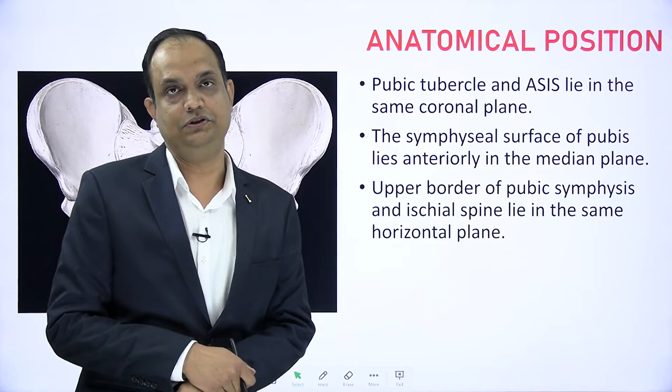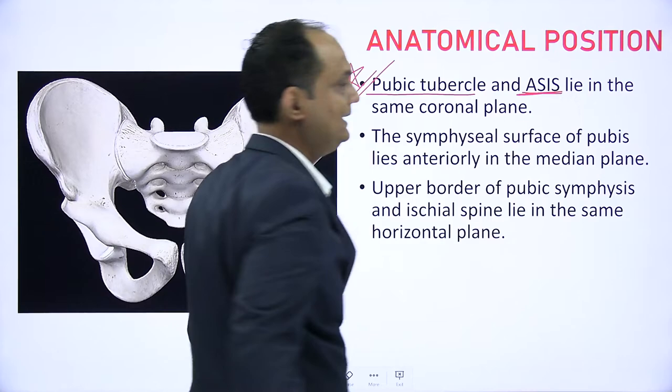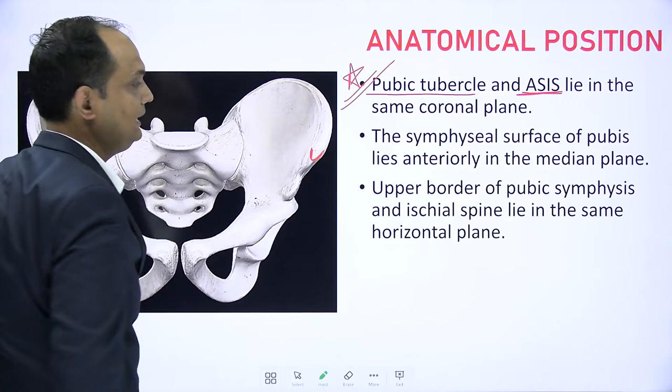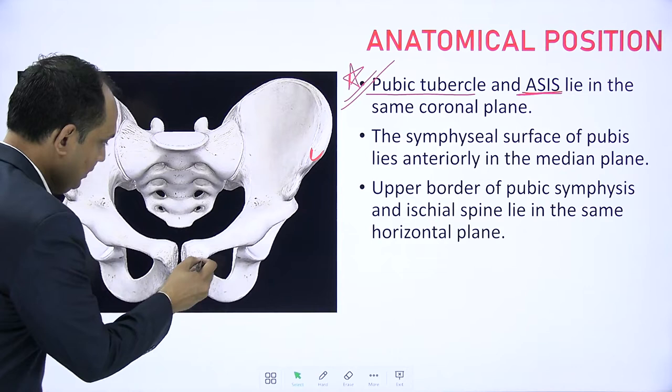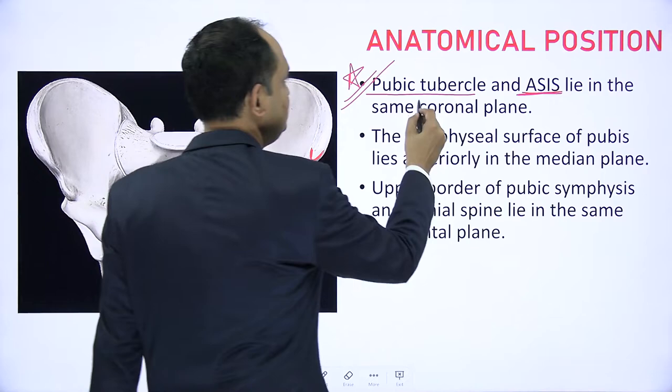Now, how to keep the hip bone in anatomical position? There are two important landmarks: pubic tubercle and ASIS — the anterior end of the iliac crest, which stands for anterior superior iliac spine. This is the anterior end of your iliac crest known as anterior superior iliac spine, and on the pubis you have a projection known as pubic tubercle. Both pubic tubercle and anterior superior iliac spine must be in one coronal plane.